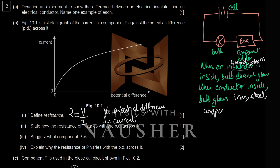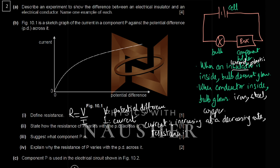Describing how the resistance of component P varies with potential difference: the graph shows a decreasing gradient, meaning current is increasing but at a decreasing rate. Because current is increasing at a decreasing rate, this shows that resistance is increasing as voltage increases.